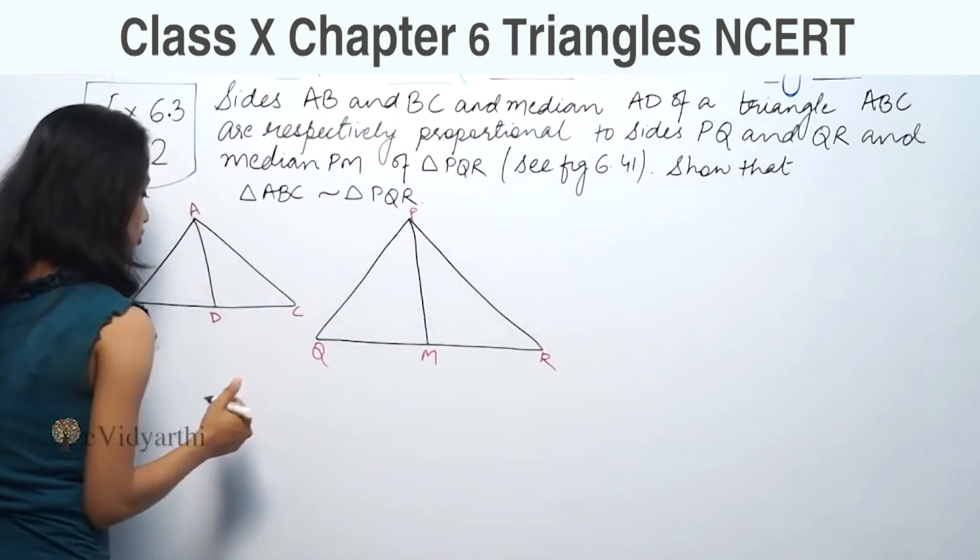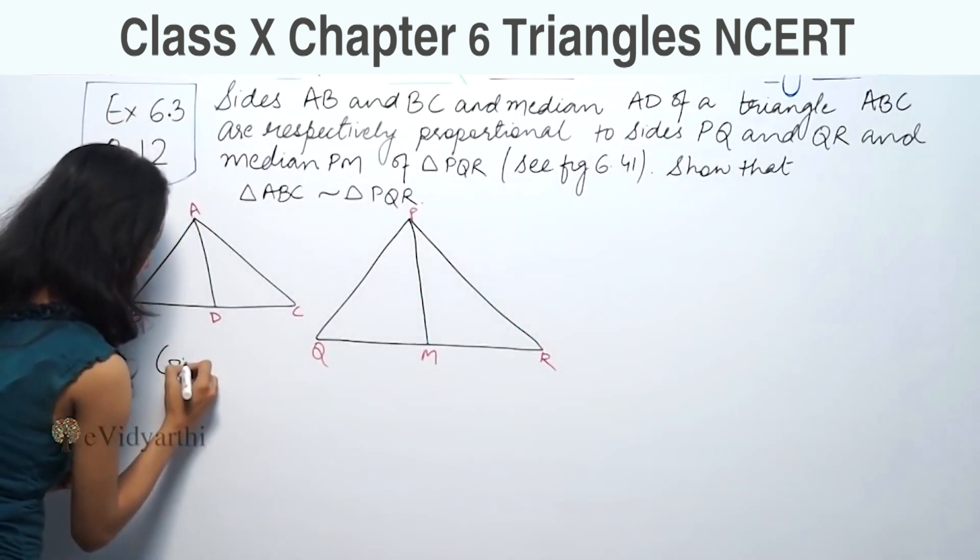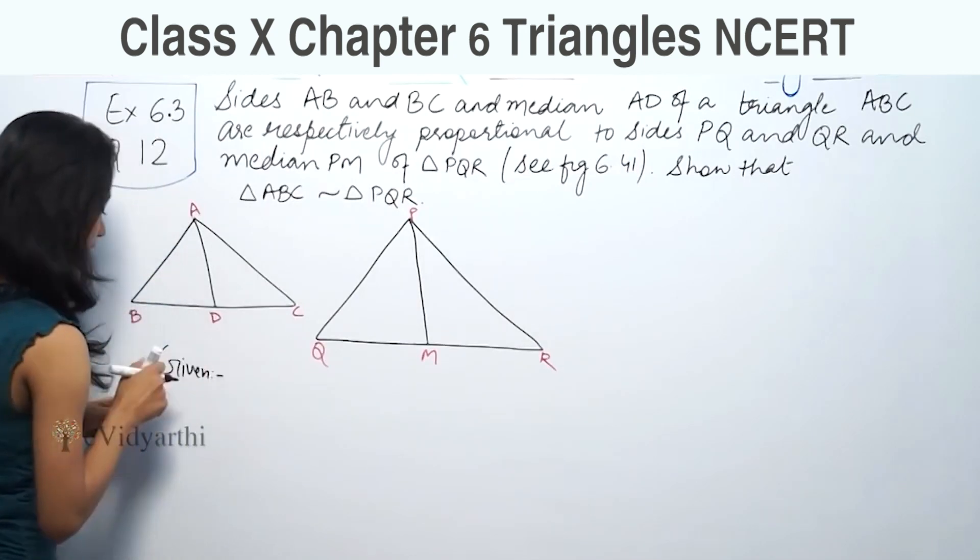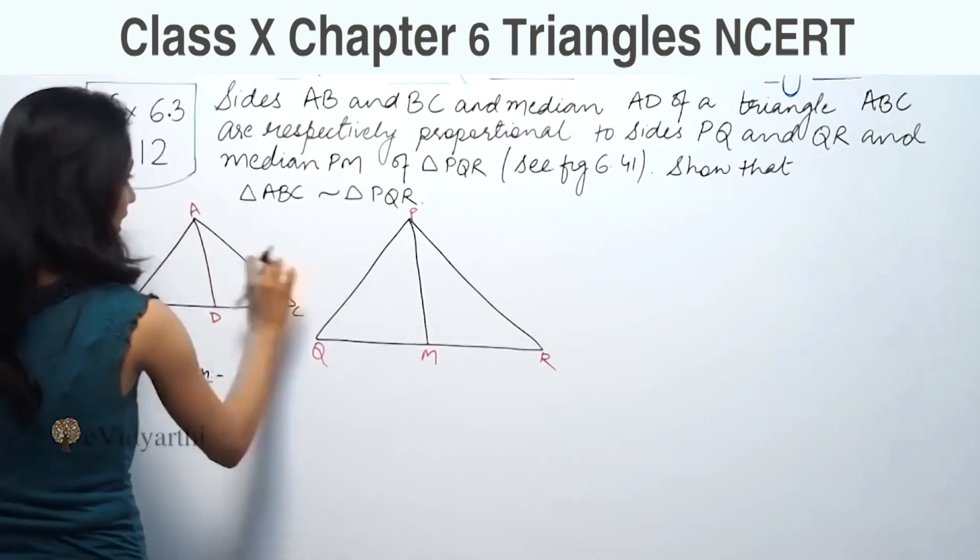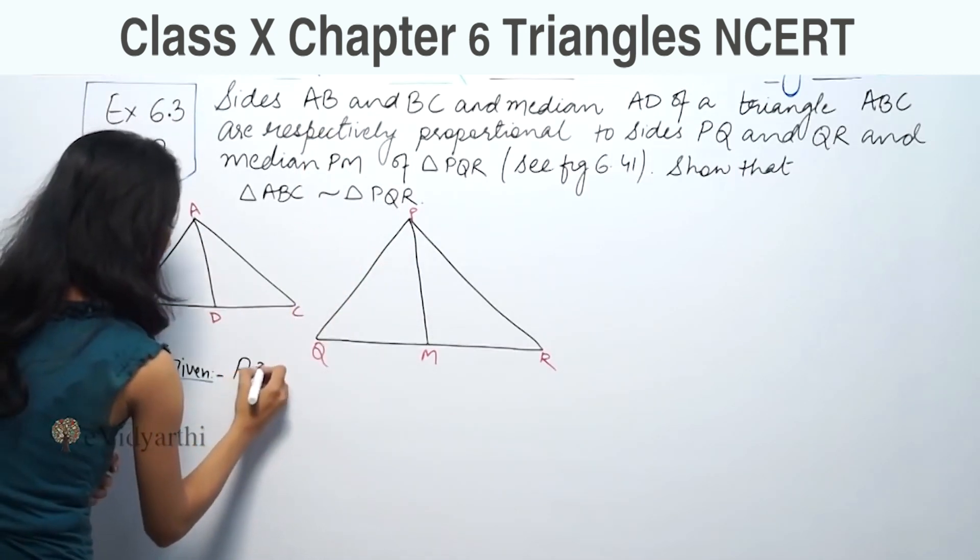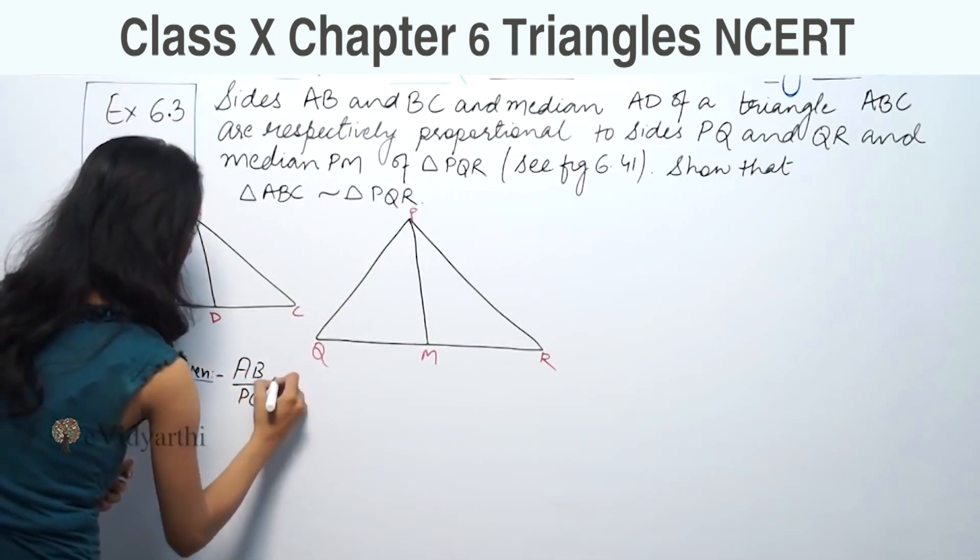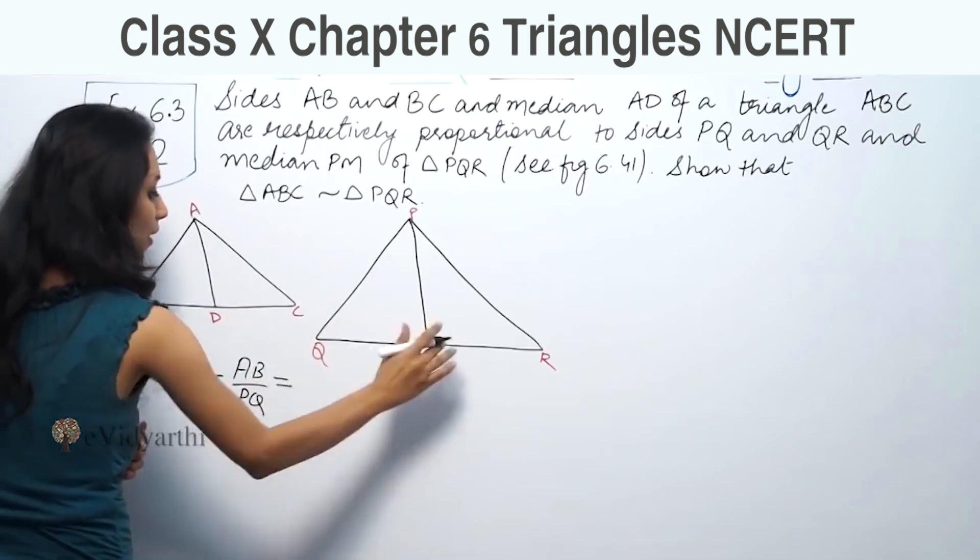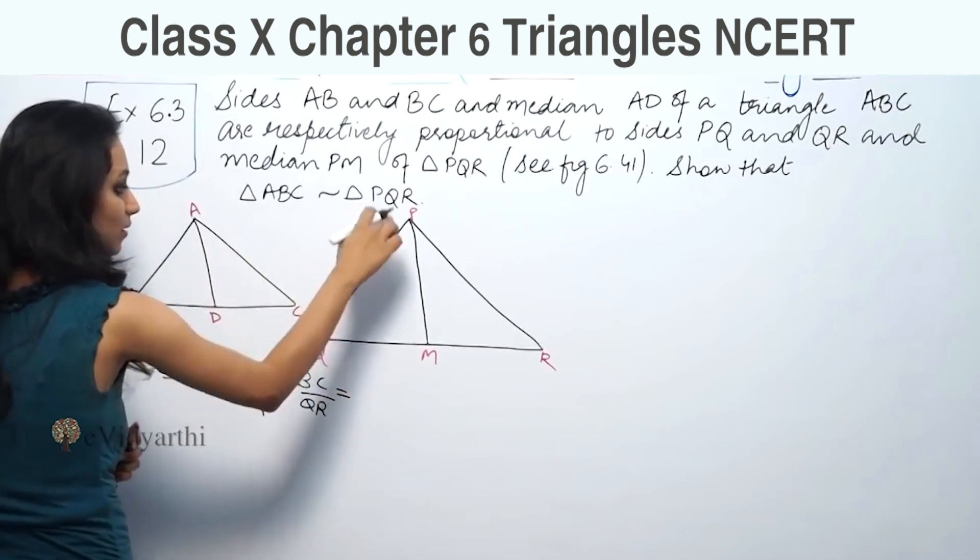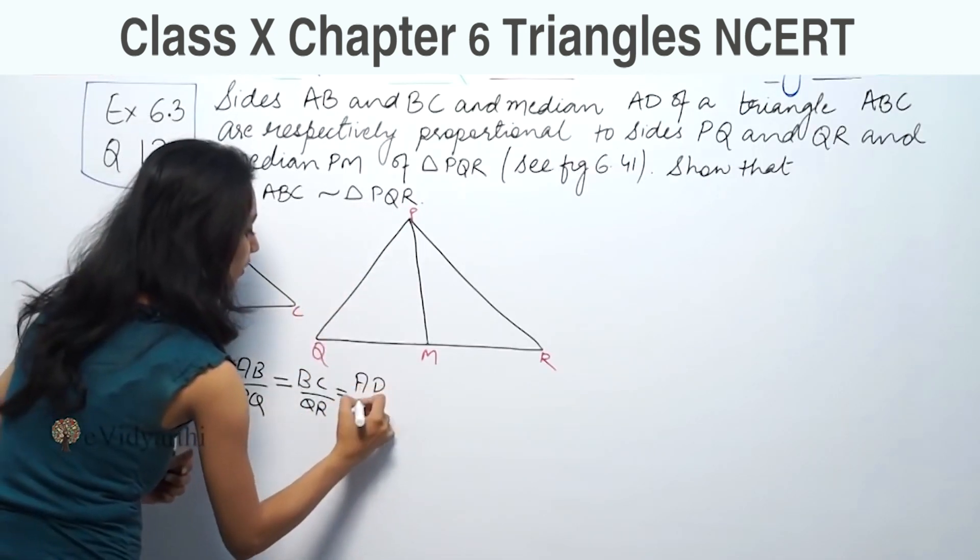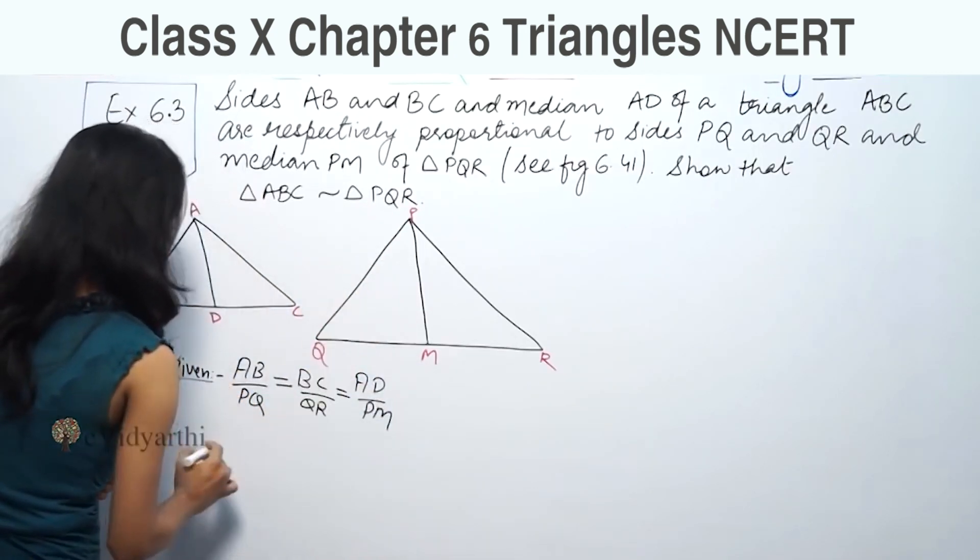The most important thing is given. So given is that AB upon PQ equal to BC upon QR equal to median AD upon PM.